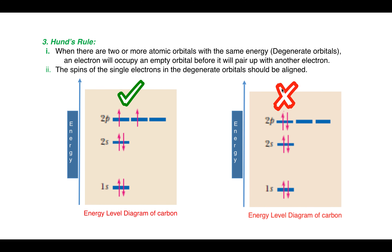For example, consider the three 2p orbitals present inside a carbon atom. These three orbitals are of the same energy — they are degenerate orbitals — and we have two 2p electrons to fill them. These two electrons will go into two different orbitals with the same spin, rather than both residing in the same orbital with opposite spins, which is not allowed.